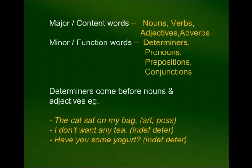Nowadays, grammarians divide English words into two categories: major and minor. In the major category are words like nouns, verbs, adjectives, and adverbs. These words are sometimes called content words because they carry the main meaning in communication. In the old days when we used to send telegrams, it was these content words that were used mainly.